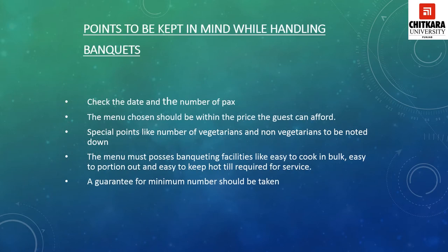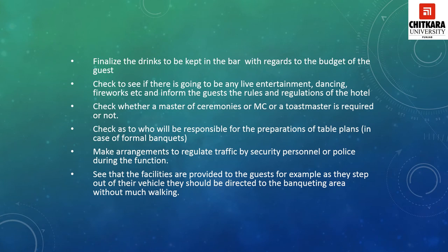A few points to keep in mind while handling banquet functions: check the date and the number of packs for the function. The menu chosen should be within the price the guest can afford. Special points like the number of vegetarian and non-vegetarian guests should be noted. The menu must possess banqueting qualities — easy to cook in bulk, easy to portion out, and easy to keep hot until service. A guarantee minimum number should be taken from the host. Finalize the drinks for the bar within the guest's budget. A dispense bar should be created inside the function area for convenience. Check for live entertainment, dancing, fireworks, uniforms, etc., and inform the guest of hotel rules and regulations.